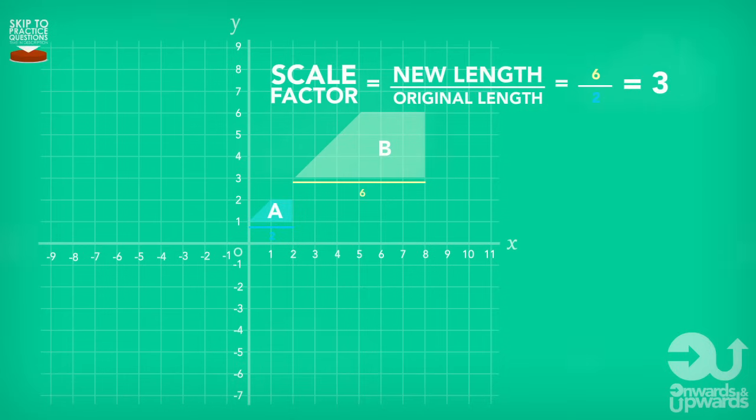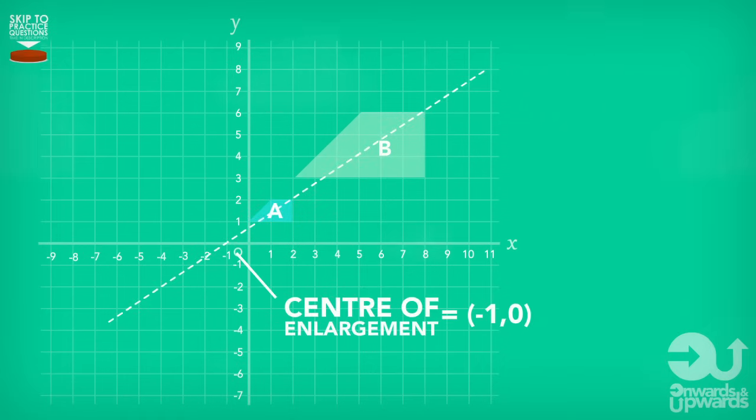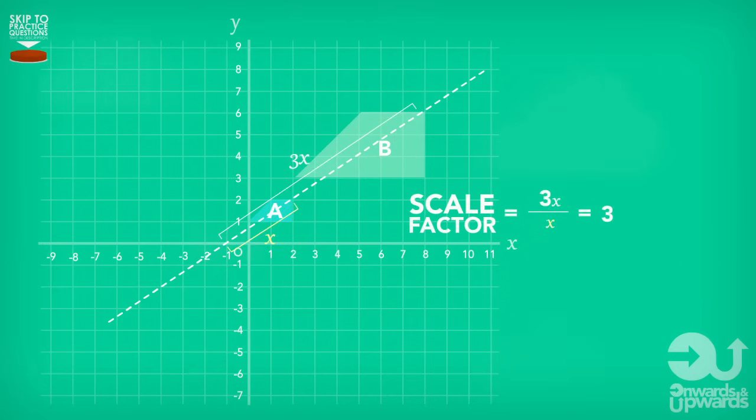The scale factor can also be found from the lines we draw to the centre of enlargement. We just divide the length that spans from the corner of the enlarged or shrunken shape to the centre by the corresponding length that spans from the corresponding corner to the centre.